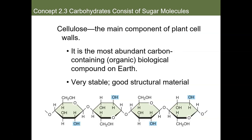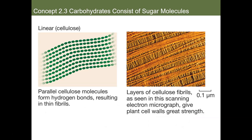Cellulose is the main component of plant cell walls, making it the most abundant carbon-based organic molecule on Earth. Because it is very stable, it makes great structural material. Because it is linear, hydrogen bonding takes place between the polar regions of the glucose units found in cellulose, intensifying its strength. It acts like a weave — these strands weave together to make an even tighter bunched-up fiber, giving plants great strength.